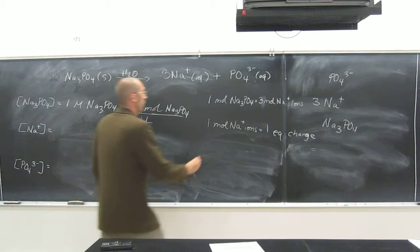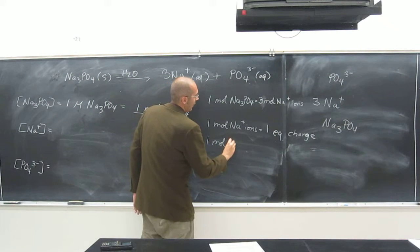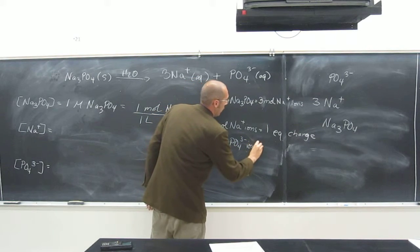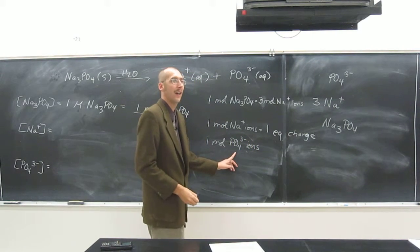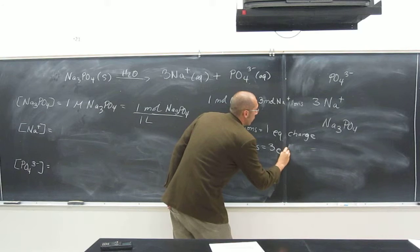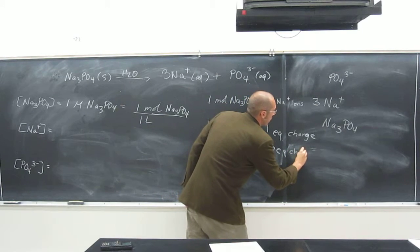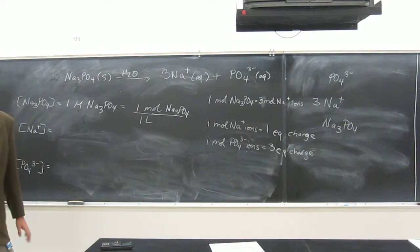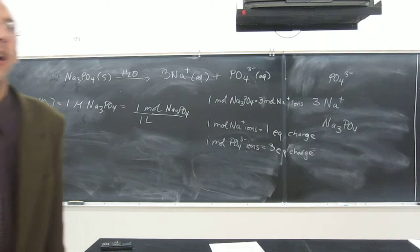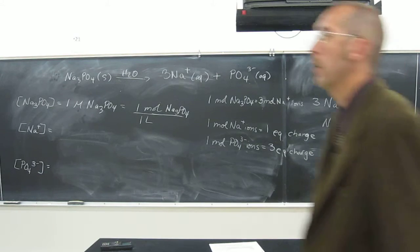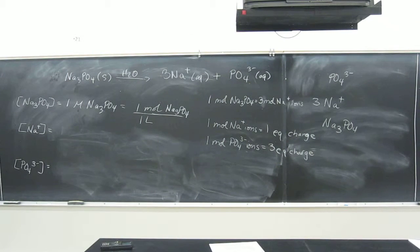So when we say we have one mole of phosphate ions, for every phosphate ion we have three charges, so we have three equivalents of charge. And you can specify negative charge or positive charge to further identify things if you want to. But for right now, we're just looking at equivalents altogether.